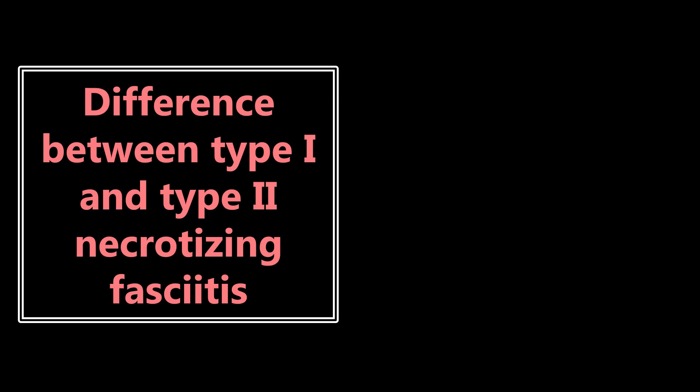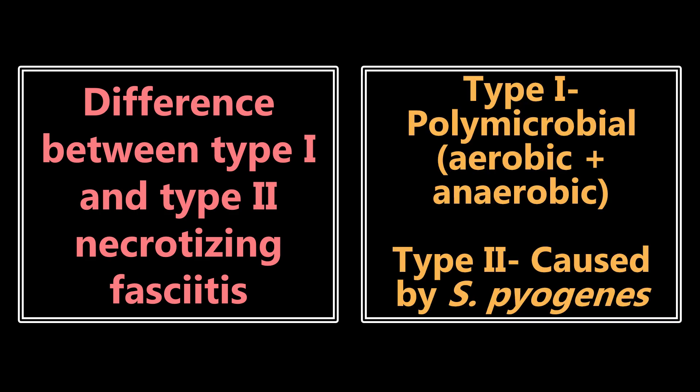The difference between type 1 and type 2 necrotizing fasciitis, or necrotizing soft tissue infection. Type 1 is polymicrobial — a combination of aerobic and anaerobic bacteria — and this is the more common form. There is a type 2, and that's typically caused by Strep pyogenes. You definitely want to know the difference. Type 2 is Strep pyogenes, and type 1 is polymicrobial.